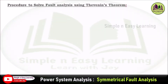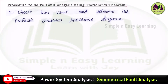Procedure to solve fault analysis using Thevenin's theorem. First step: choose the base value and determine the pre-fault conditions reactance diagram. If the single line diagram is not given, we need to draw the single line diagram from the given data and obtain the reactance diagram. That will be considered as the pre-fault condition reactance diagram.